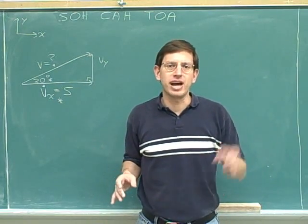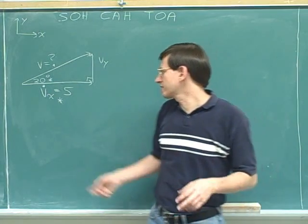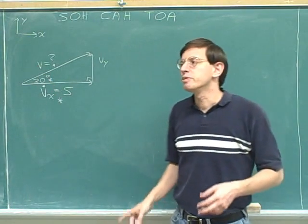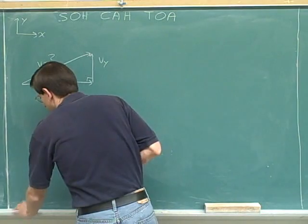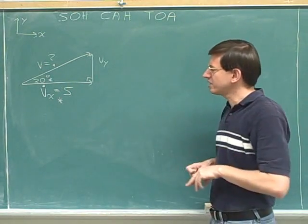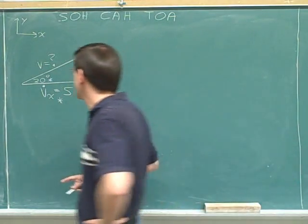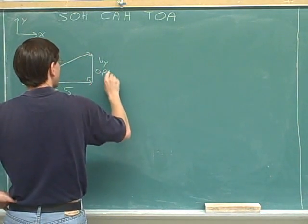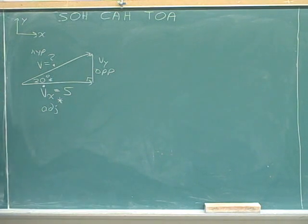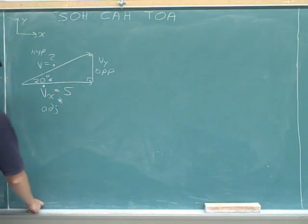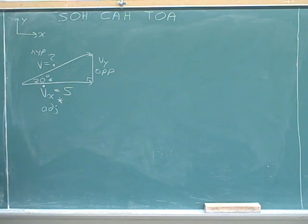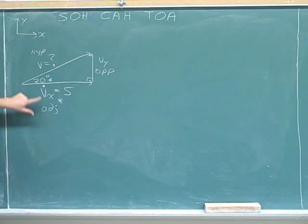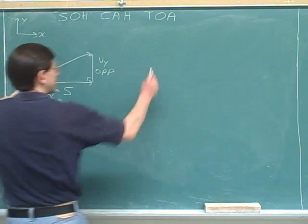Usually in physics you're given the hypotenuse and an angle, but this was a little unusual because I gave you a leg and an angle. We should be able to solve this pretty much the same way using the trig functions — we just have to decide which trig function is appropriate. One thing we need to do is label the hypotenuse, opposite, and adjacent sides. We know a number about the adjacent side, so we want to use a trig function that deals with the adjacent side.